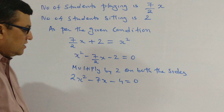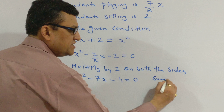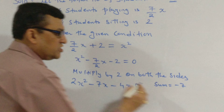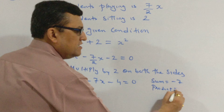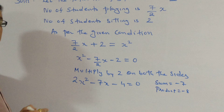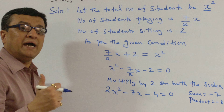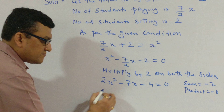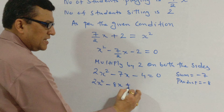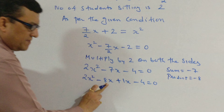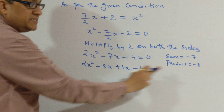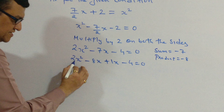Now to solve this quadratic equation: the sum we want is minus 7 and the product is minus 4 times 2, which is minus 8. The two numbers that satisfy this are minus 8 and plus 1, since minus 8 plus 1 equals minus 7, and minus 8 times plus 1 equals minus 8. So we write the two middle terms as minus 8x and plus x, giving 2x² minus 8x plus x minus 4 equals zero.